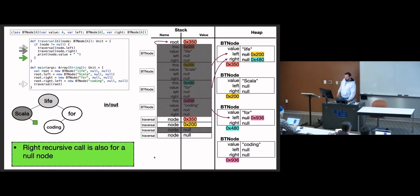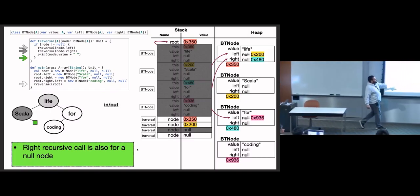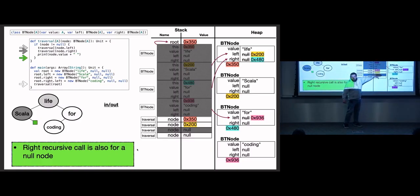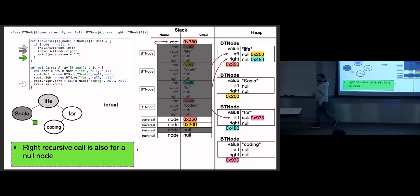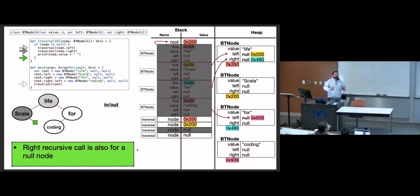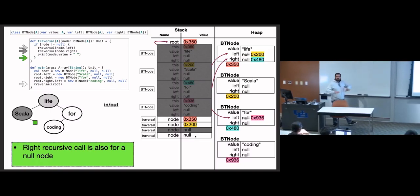Execution returns to the frame for ox200 — it just made its left recursive call and is now ready to make its right recursive call. Each stack frame remembers where it is in the execution. It's going to make the right recursive call — we hit the base case again, returns. Now this stack frame is on top: it made both recursive calls and it's ready to print its value. We're going to print `scala` — that's post-order: both recursive calls then visit the node's value.